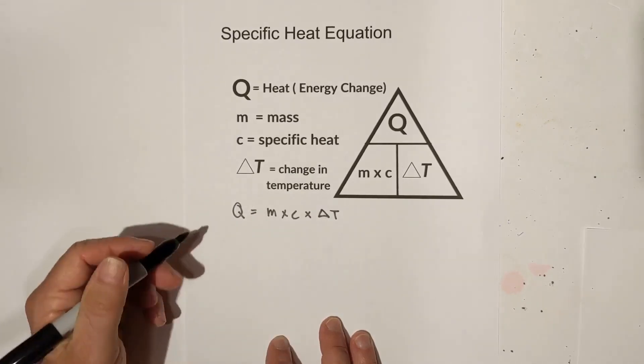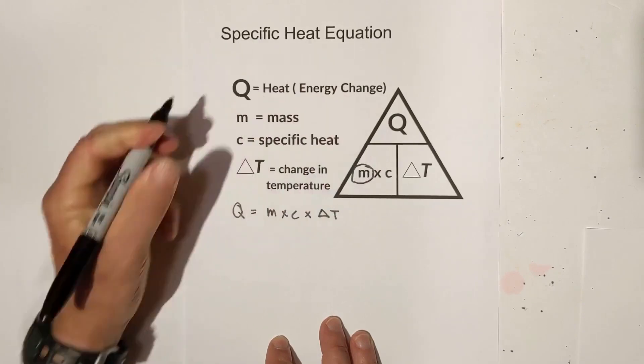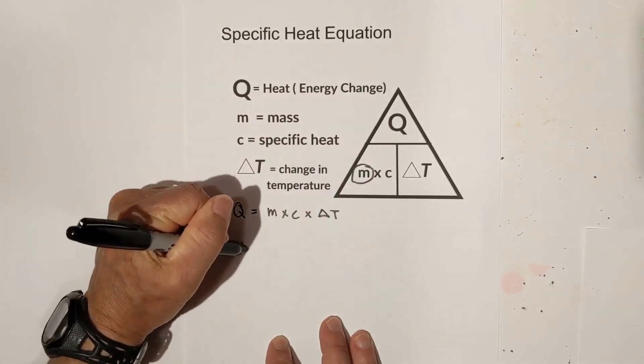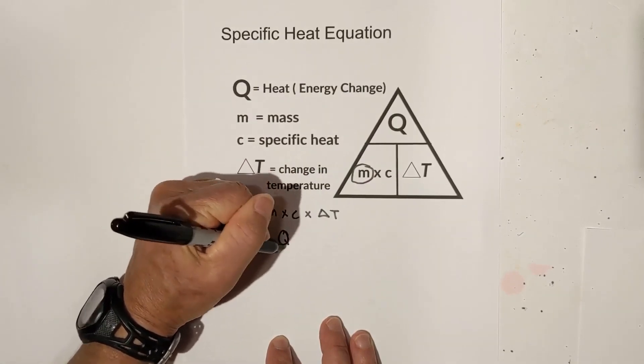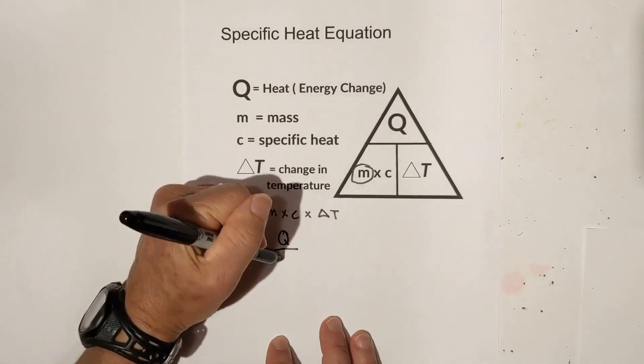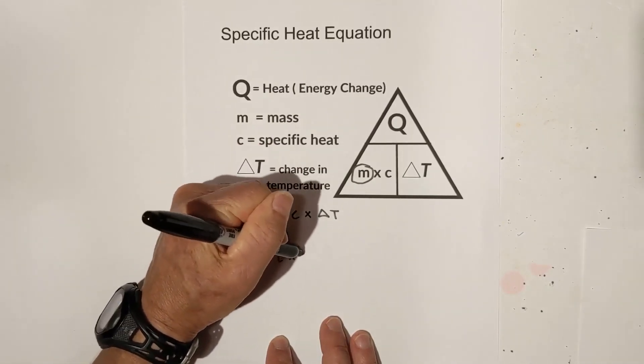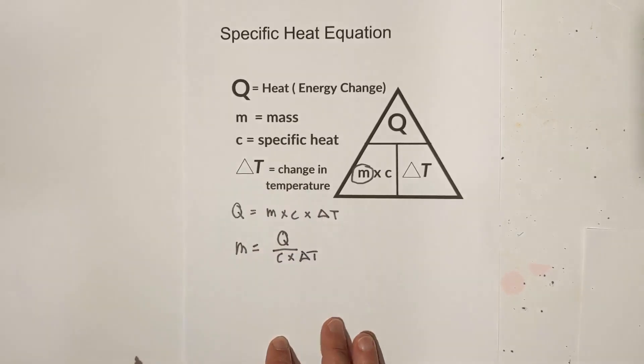How about if I want to know mass? I pull it out: mass equals Q divided by what's left, C times change in temperature.